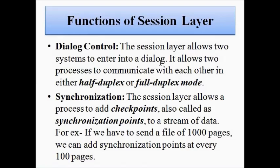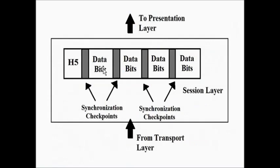The second main function is synchronization. The session layer adds certain checkpoints called synchronization points in its data packets. The session layer data packet consists of a header portion labeled H5 — H for header, 5 because it is the fifth layer of the OSI model — and the data bits are separated by gray rectangular portions which are called synchronization checkpoints.